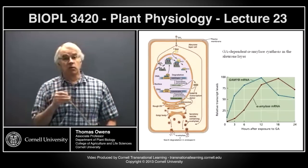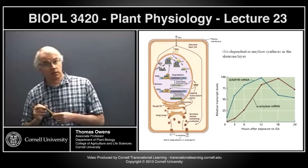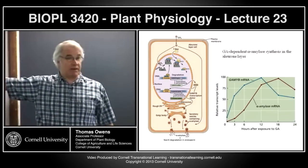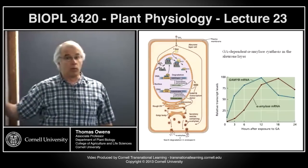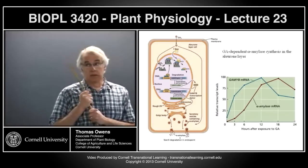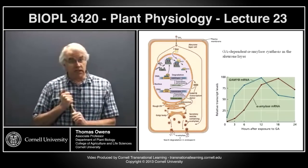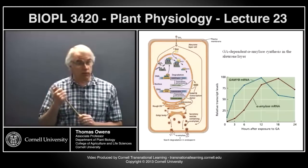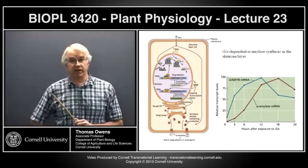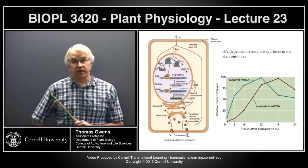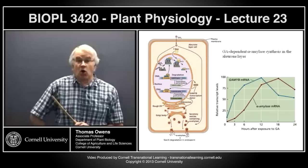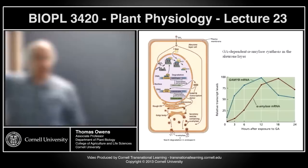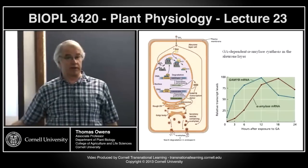Any step in a signal transduction pathway can have either positive or negative regulation. When we talk about ethylene, we'll see that negative regulation happens at the very beginning — the receptor itself is a negative regulator. So it can happen anywhere in the signal transduction pathway, but it doesn't mean negative regulation is the only thing. At this step with alpha-amylase, it would be positive regulation.